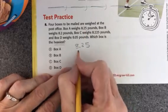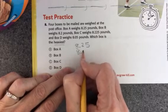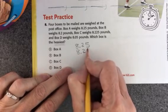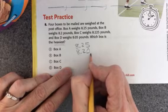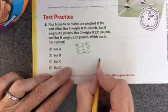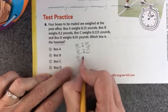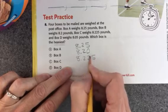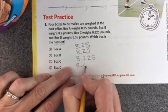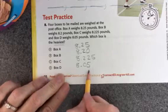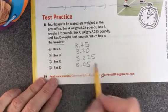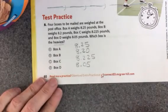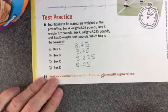There's 8 and 25 hundredths. Here's 8 and 2 tenths and I'll annex a zero which means to add a zero at the end. Then write down the other numbers. Here's 8 and 225 thousandths. And 8 and 5 hundredths. You're going to find which one's the heaviest. Now that they're written in a column, it'll be easier to see which one is the heaviest.